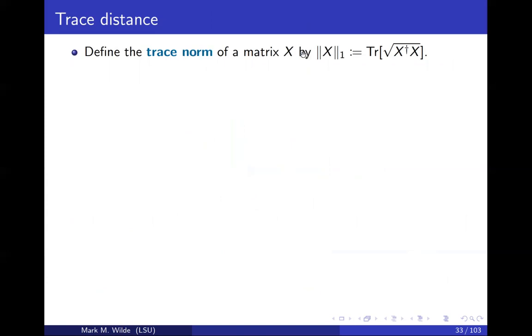There's something called the trace norm of a matrix, and it's defined in this way. So how do you compute it? You take X and X dagger, you multiply them. The function you apply to that matrix is the square root function. And then you apply the trace. And if you know the singular value decomposition, the trace norm will simply be the sum of the singular values of the matrix X. That's something you can prove as an interesting exercise.